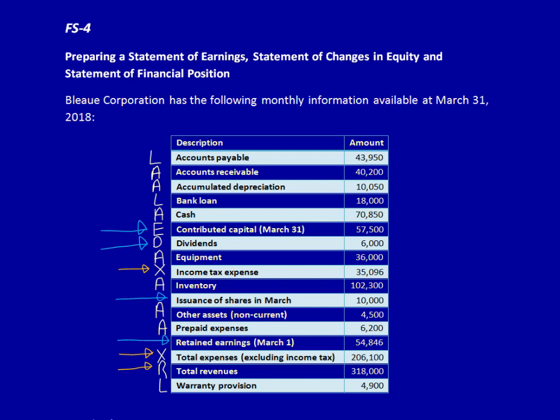In this video we're continuing with question number four. We've already completed the statement of earnings and the statement of changes in equity. We're now going to do the statement of financial position classified. As you know from a previous video, the basic accounting equation for the statement of financial position is assets equal to liabilities plus equity.